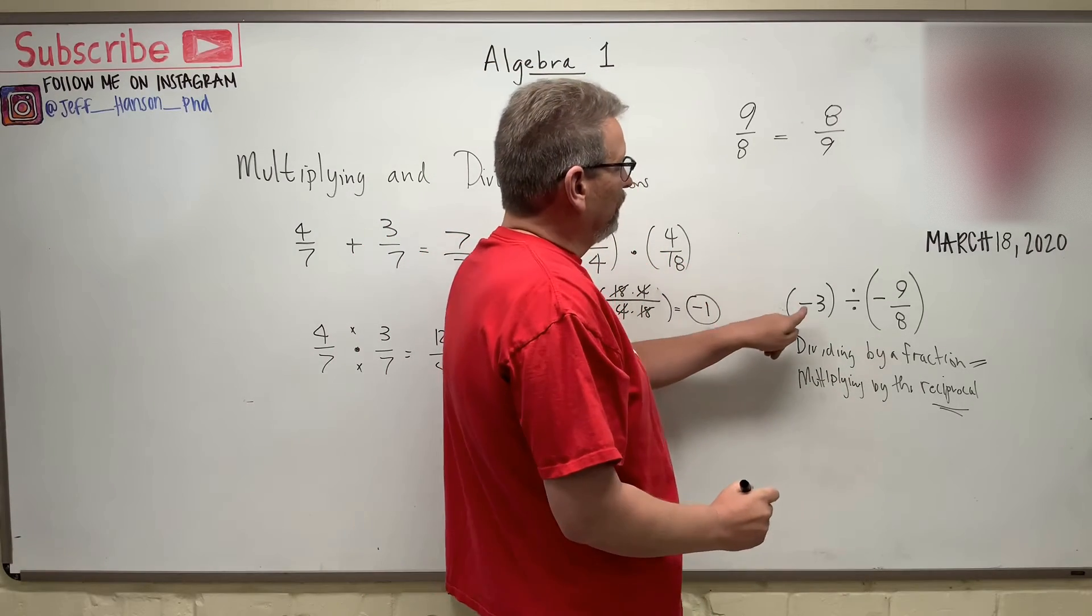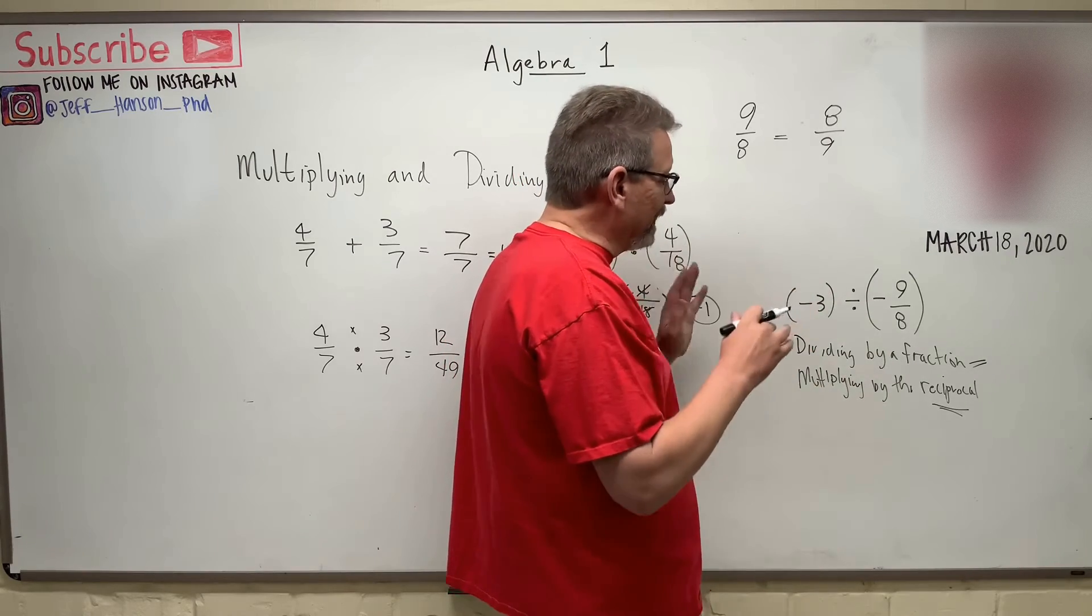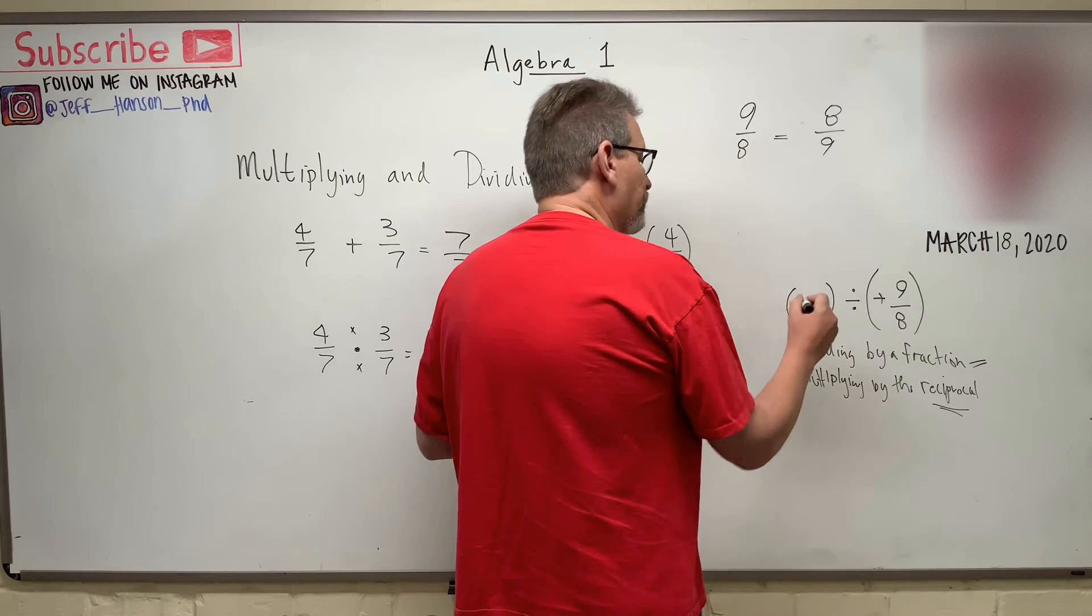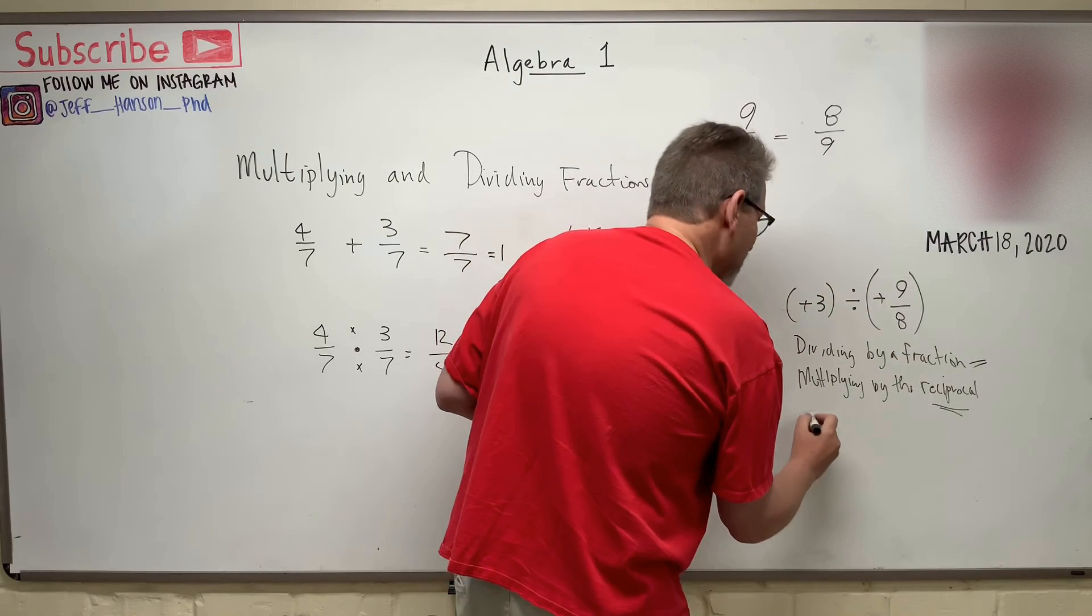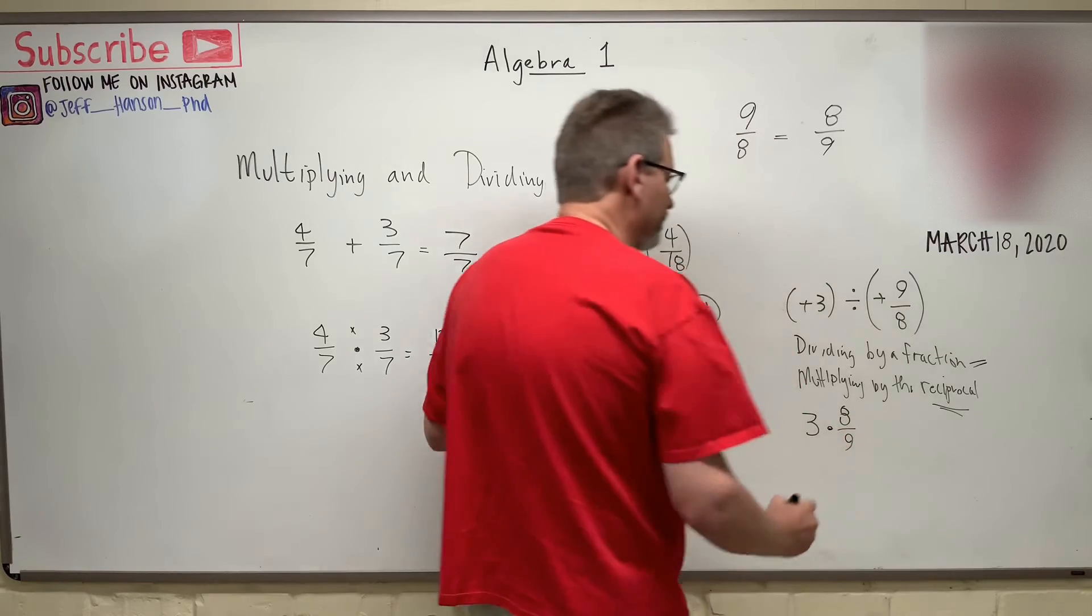And also, a minus divided by a minus turns into a what? Plus, right? So I can get rid of the signs altogether right away. So 3 divided by 9 over 8 is the same as 3 times 8 over 9.